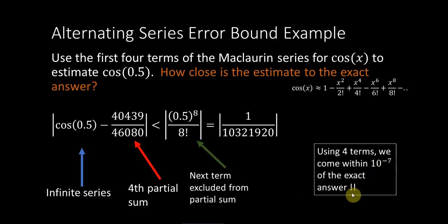we are within 10 to the negative seventh of the exact answer. So we are within like 1 ten-millionth of the exact answer, which is a spectacular result.